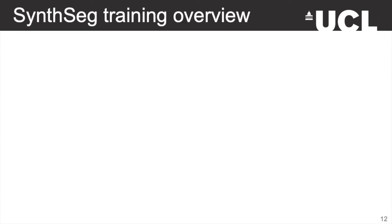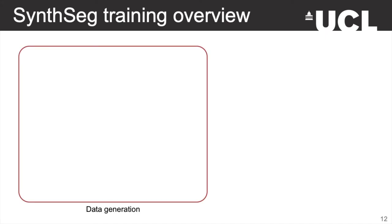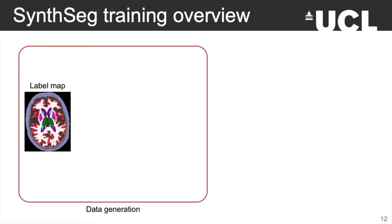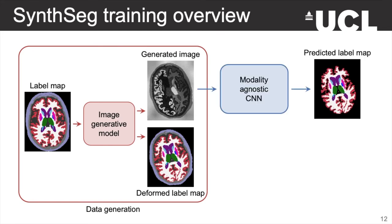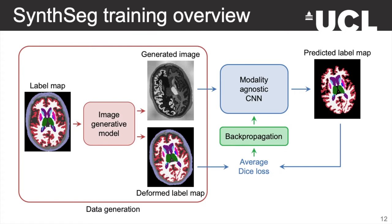Here is an overview of how we train SynthSeg. Importantly, the data generation happens on the fly, so the network is never exposed twice to the same contrast. A training step starts by randomly selecting a label map among the training segmentations. We then put it into the image generative model to retrieve an image of random contrast and its corresponding segmentation. We take this image and run it through the network to obtain the prediction. In this work we use the U-Net architecture, but this could be replaced with any segmentation network. The prediction is then compared to the ground truth by computing the average Dice loss, and we use backpropagation to update the network weights to improve segmentation quality over training.